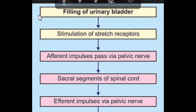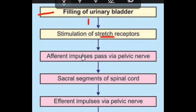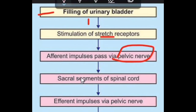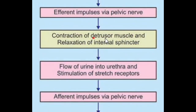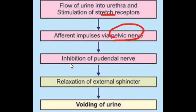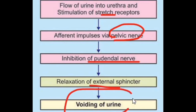Let's do a quick revision. First, filling of the urinary bladder stimulates stretch receptors, which send afferent impulses via the pelvic nerve to the sacral segments of the spinal cord. The spinal cord sends efferent impulses via the pelvic nerve, causing contraction of the detrusor muscle and relaxation of the internal sphincter. Flow of urine into the urethra again stimulates stretch receptors, and efferent impulses pass via the pelvic nerve. This leads to inhibition of the pudendal nerve, relaxation of the external sphincter, and finally, voiding of urine.